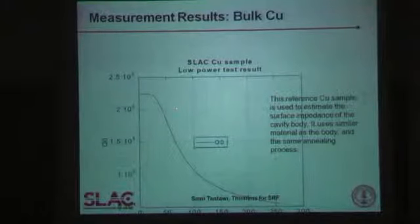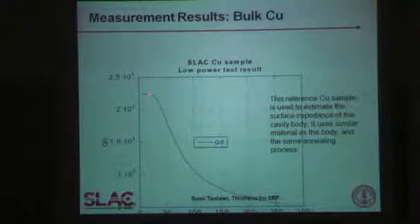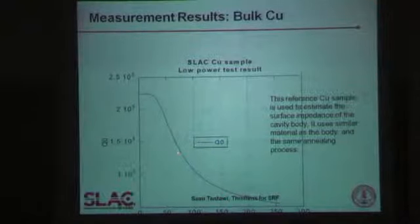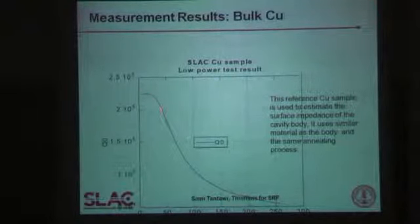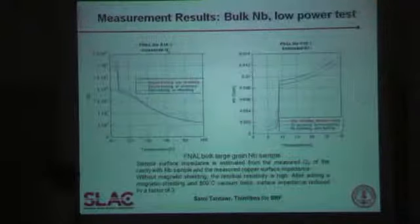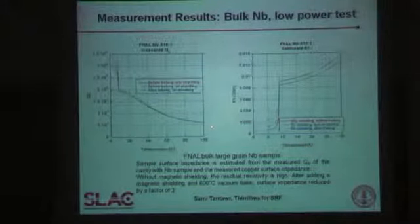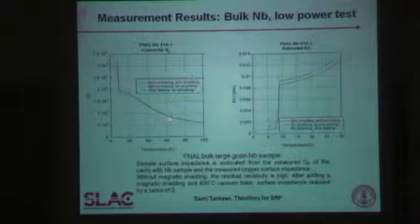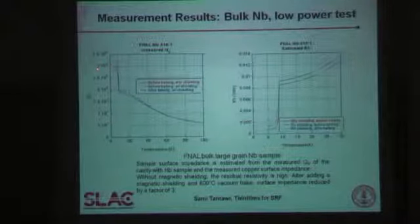To really understand this, we started doing very careful measurements of the quality factor itself to see how well it matched our simulations. The first thing we did was measure pure copper without any niobium sample, which served as the reference for understanding the surface resistance of niobium samples. We then immediately began seeing an effect on the quality factor. The red curve here is a random niobium sample obtained from Fermilab, and it reaches a quality factor of about 3×10⁵.